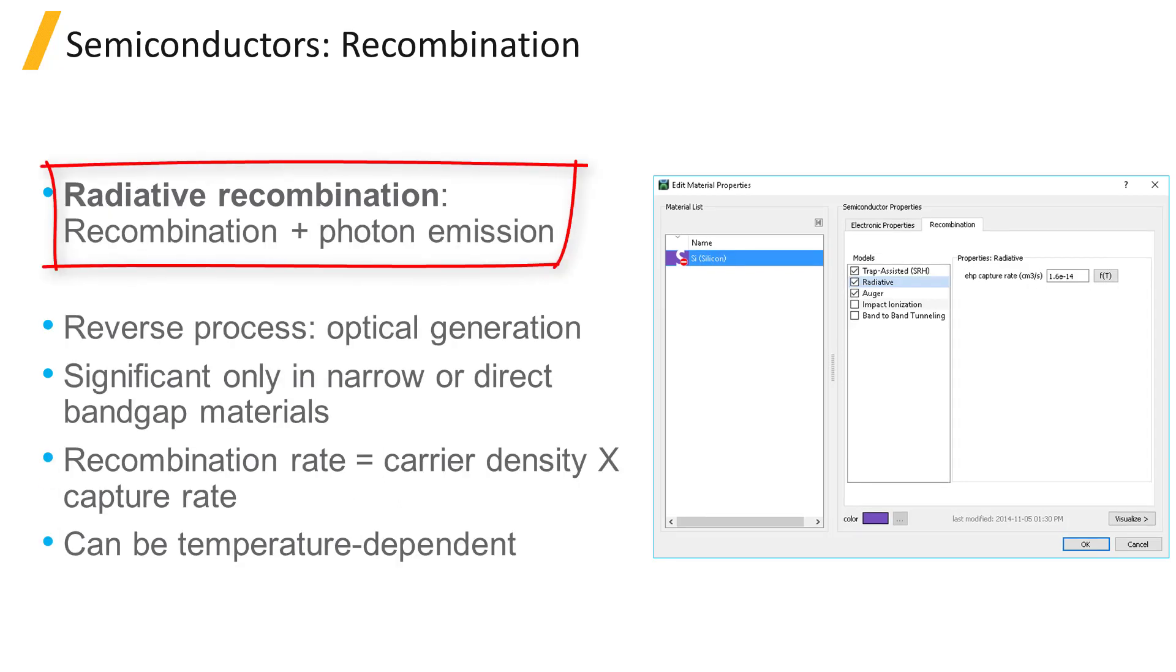In a radiative transition, a conduction band electron will relax directly, emitting a photon whose energy approximately equals that of the band gap, and then recombine with a hole in the valence band.